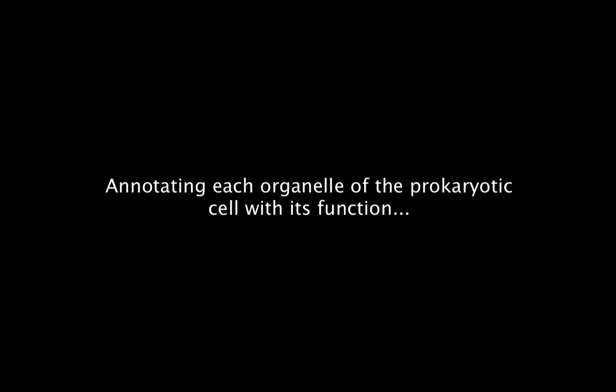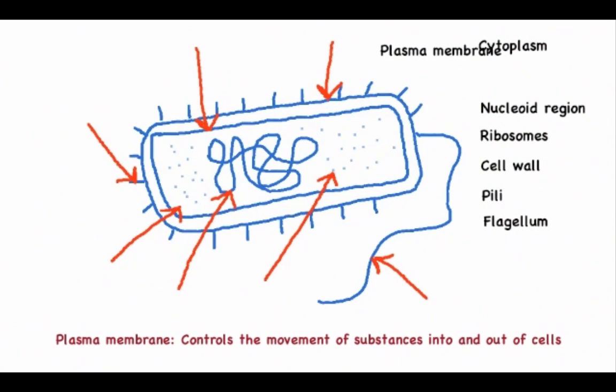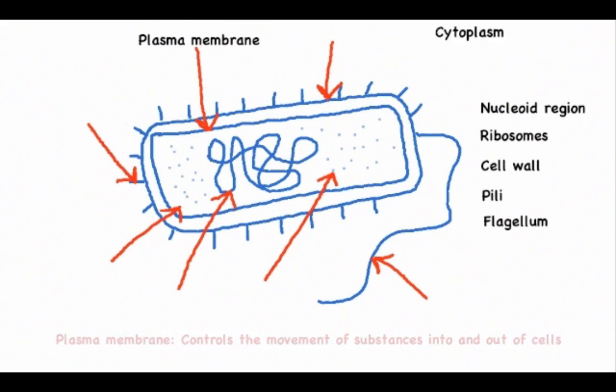So now we're going to annotate parts of the prokaryotic cell with their functions, starting with the plasma membrane. This is selectively permeable to ions and organic molecules and controls the movement of substances into and out of the cell.